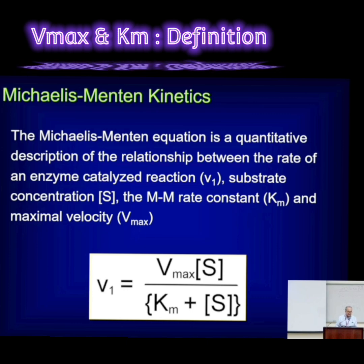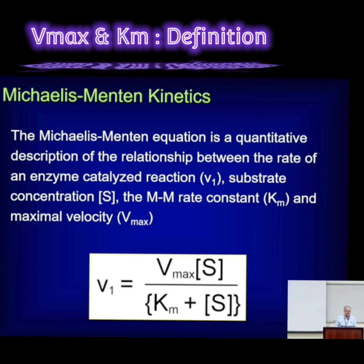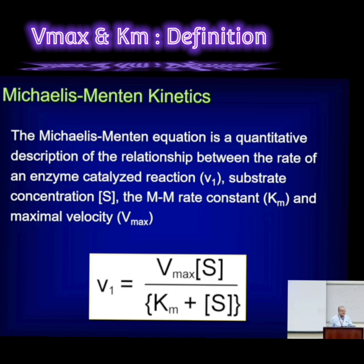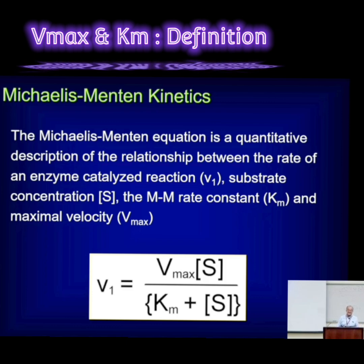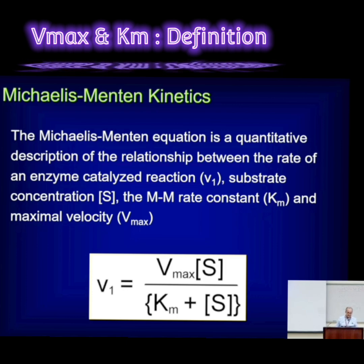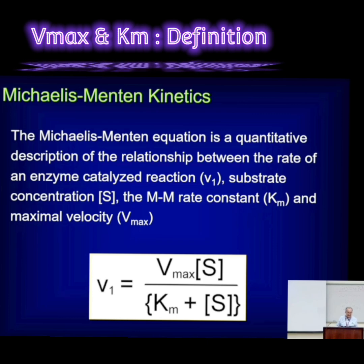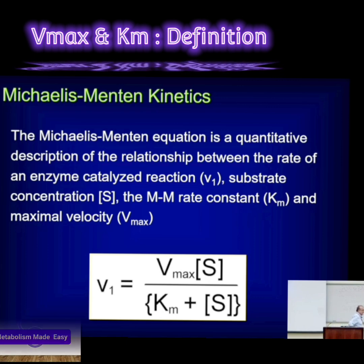For example, if an enzyme has a Km for its substrate of 10 micromolar, that's a pretty low concentration, which means it has high affinity for its substrate. On the other hand, if the enzyme needs 10 millimolar before it binds a substrate, you can say it has low affinity for its substrate.